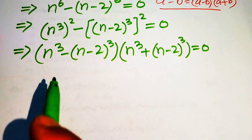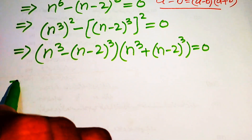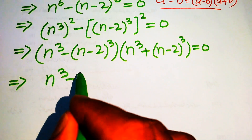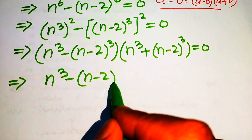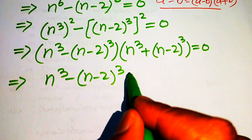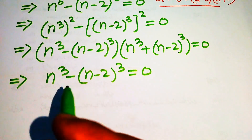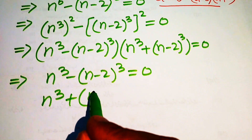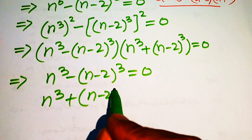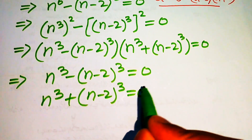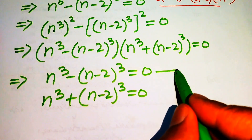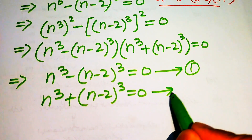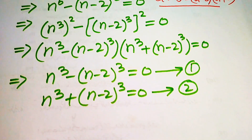In the next step we convert this into two cases. Our first case is n cubed minus n minus 2 cubed equals to 0, which we call equation number 1. The other case is n cubed plus n minus 2 cubed equals to 0, which we call equation number 2.